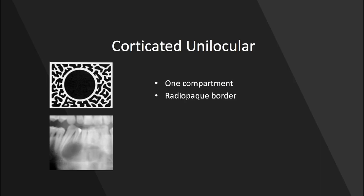Let's start with some radiolucent lesions and how to categorize them based on appearance. The first one is the corticated unilocular radiolucency. Unilocular means that it has one compartment — there's one central compartment — and corticated means that there is a radiopaque border that surrounds it. This is a great example of a corticated unilocular radiolucency.